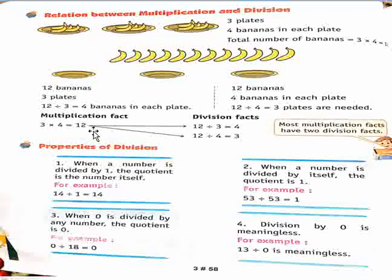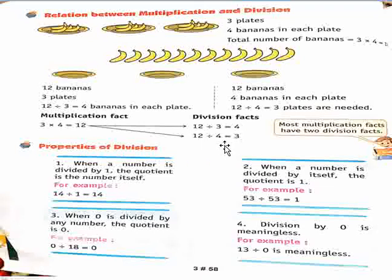Multiplication fact: we have 3 multiplied by 4 equals 12. We have 2 division facts. So 12 divided by 3 equals 4, and 12 divided by 4 equals 3.